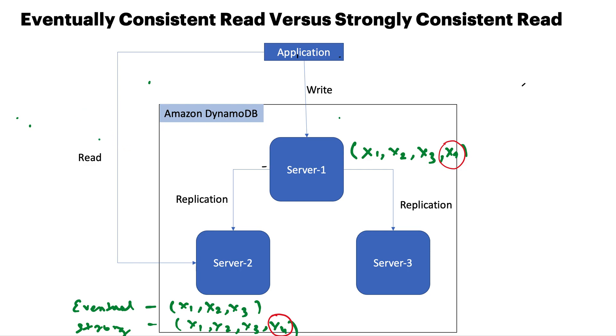Let's try to understand the difference between eventually consistent read versus strongly consistent read. To understand this clearly, let's look at this DynamoDB architecture. It is made of three nodes - there is a primary node